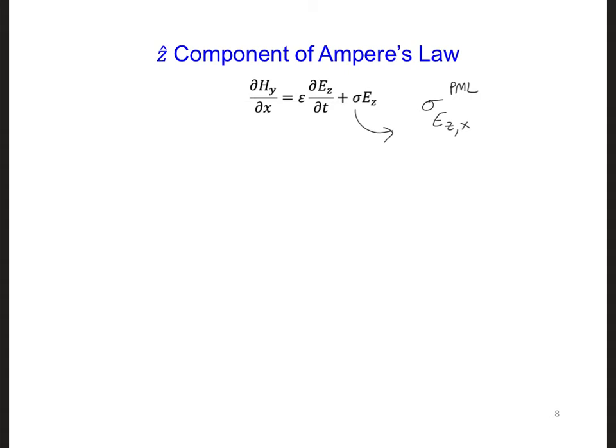Next, the derivation of the PML for the right side of the grid is easier if we consider the time harmonic form of this equation.